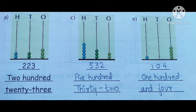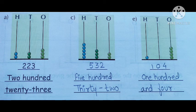Now, as you can see on the screen, there is an abacus drawn, and each of the abacus has its own place. The first one is hundreds, the second one is tens, and the third one is ones. So, hundreds is having two beads, tens is having two beads, and ones is having three beads.